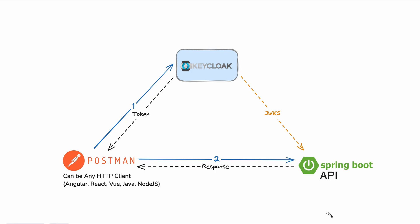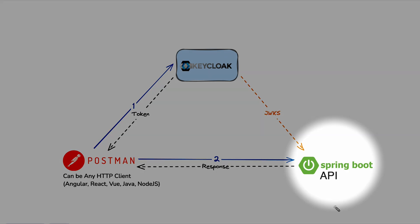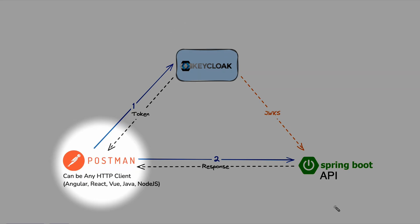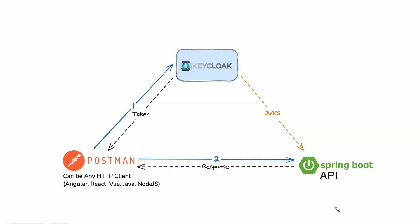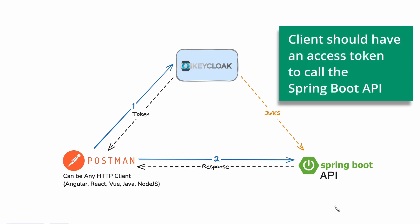In this video I'm going to explain how to secure a Spring Boot API using Keycloak identity and access management system. Before going into the details, I will briefly explain the request flow diagram. Here you can see the Spring Boot API, Keycloak server, and the Postman client. The Postman client can be replaced with any HTTP client — an Angular, React, or Vue single page application, or a backend client like Java or Node.js.